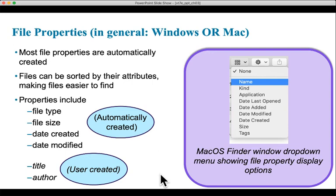File extensions are important — they determine where a file was created and in what program it can be opened. Another attribute of files is file properties — simply a series of identifying elements attached to a file. Most properties are automatically created when you or somebody else makes a file, such as a new Word document or audio file. The properties are attached automatically by the computer and operating system. Some properties include file type, size, the date the file was created, and the date modified.